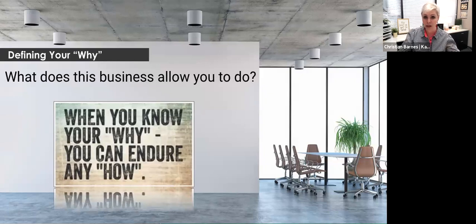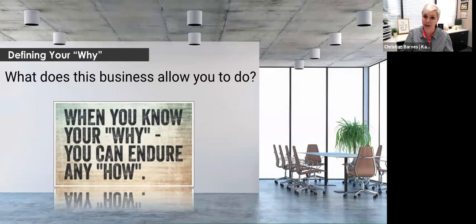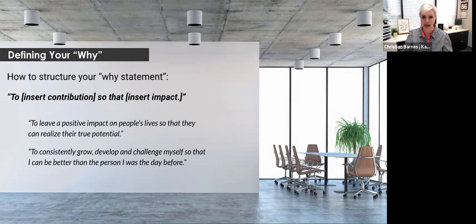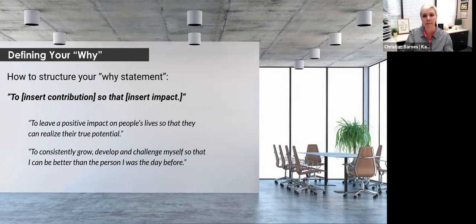I think it's on page three of your workbook where you're going to define your why. You can either do it in a sentence or use bullet points, but really ask yourself: what does this business allow you to do? I love this quote on the screen — 'When you know your why, you can endure any how.' It'll make getting out of bed in the morning and fighting that good fight easier if you know what your why is and what you're working towards. If you're writing in sentence form, I'd encourage you to use this structure: 'To [blank] so that [blank]' — insert your contribution and then your impact. For example: 'To leave a positive impact on people's lives so that they can realize their true potential.' Or: 'To consistently grow, develop, and challenge myself so that I can be a better person than I was the day before.' Lots of variations — lots of different things you can do with your why.